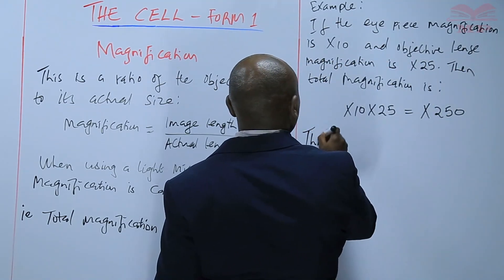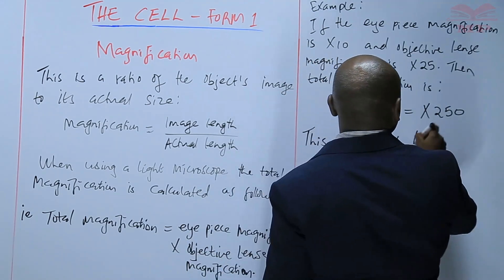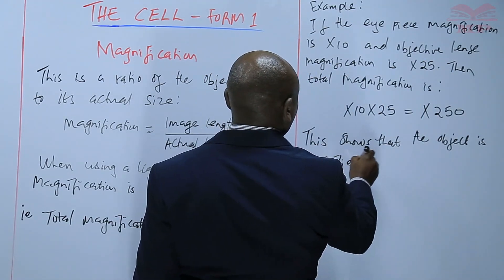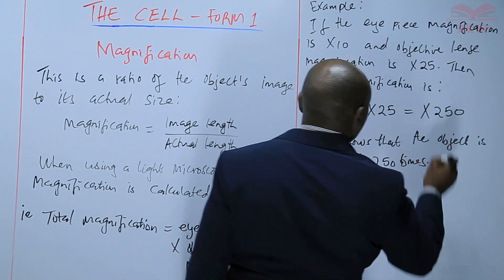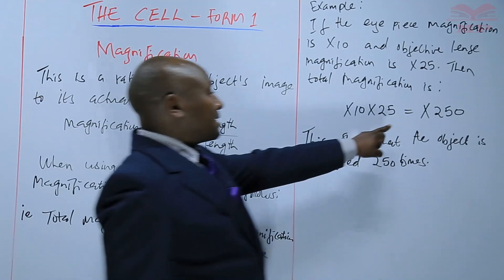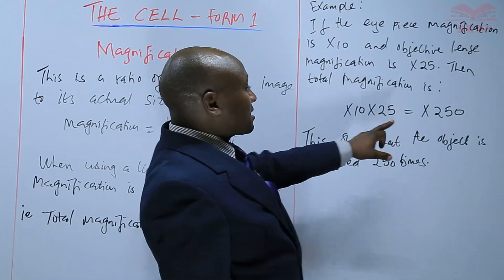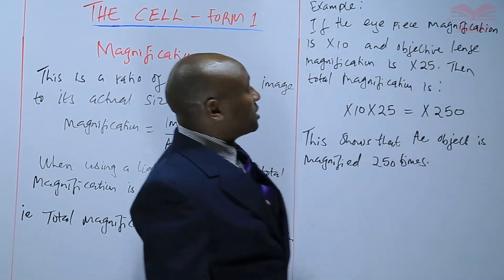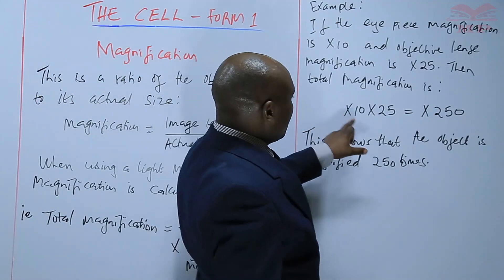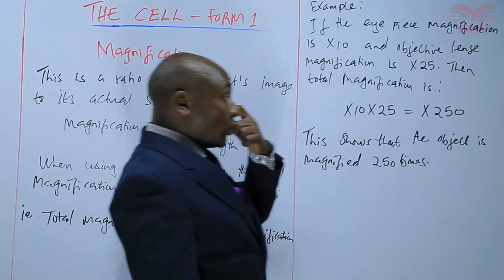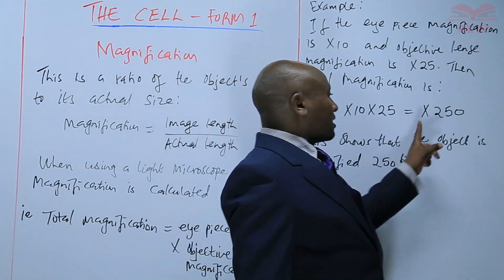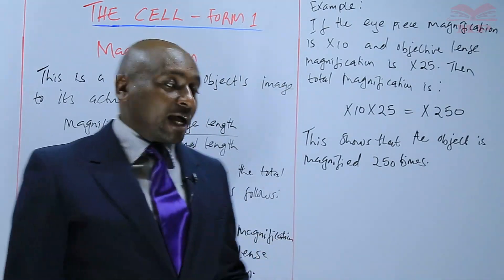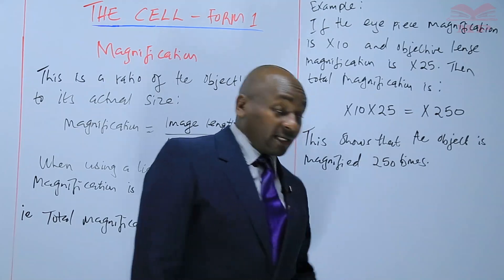This shows that the object is magnified 250 times. So always when you are stating the magnification, we have to write it as ×250. This ×250 is arrived at by multiplying ×10 (the eyepiece magnification) with ×25 (the objective lens magnification). We don't just write 250 — we write ×250 because that value has no units; it's the number of times an object has been enlarged or magnified.